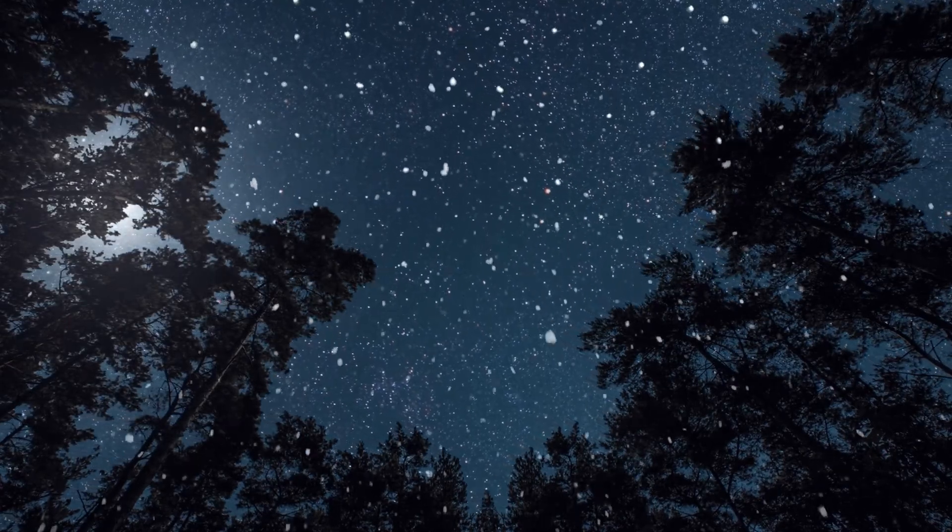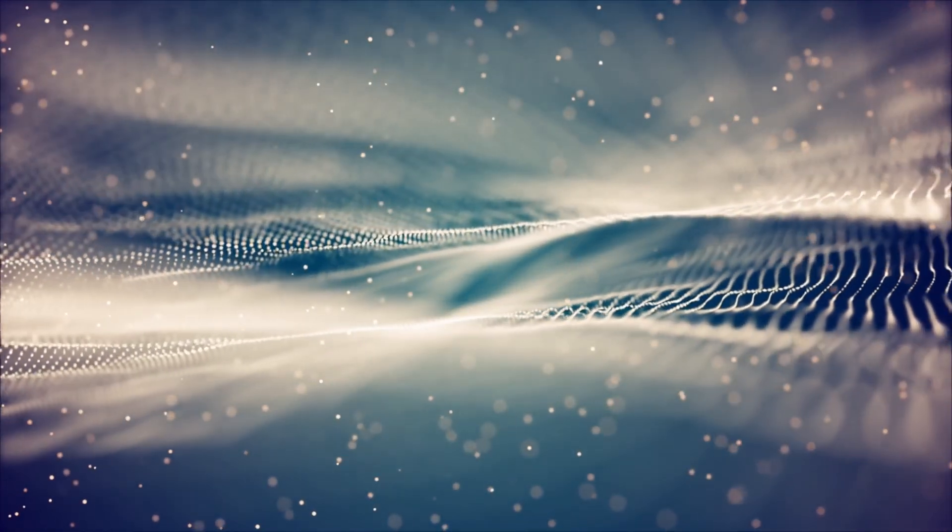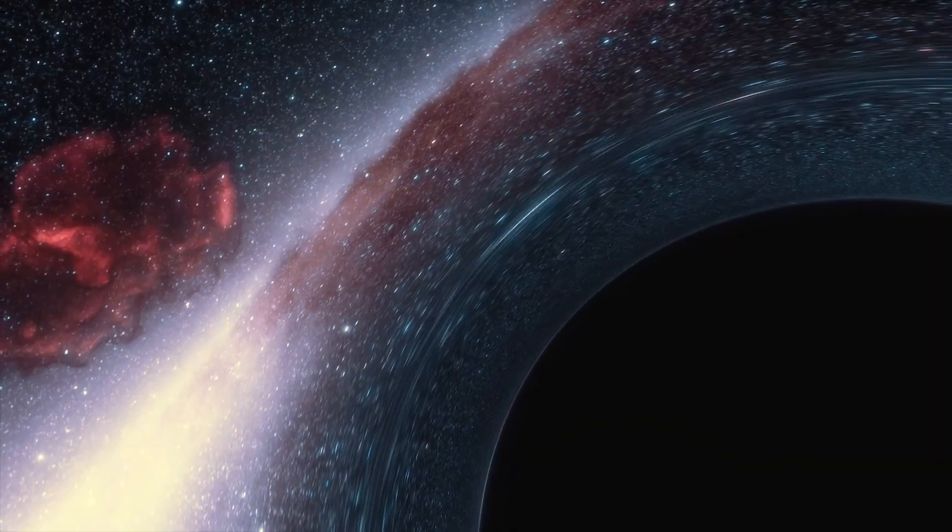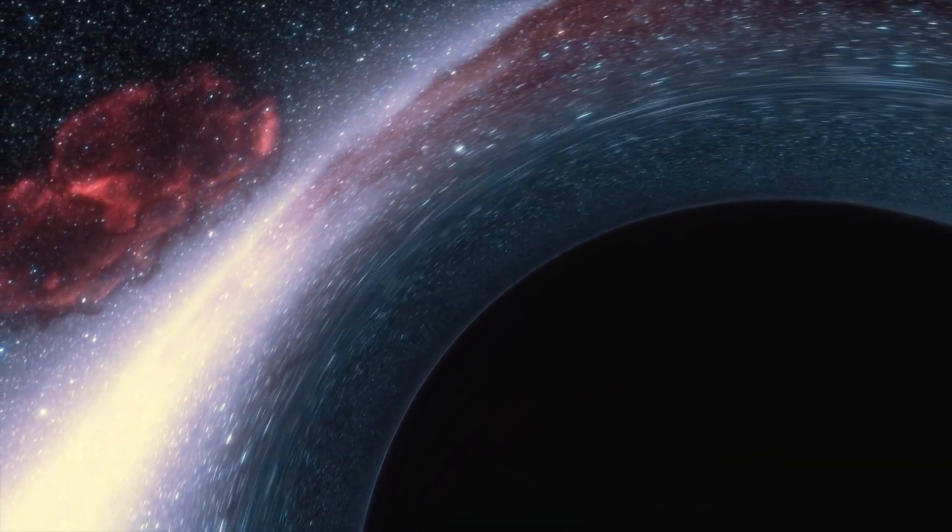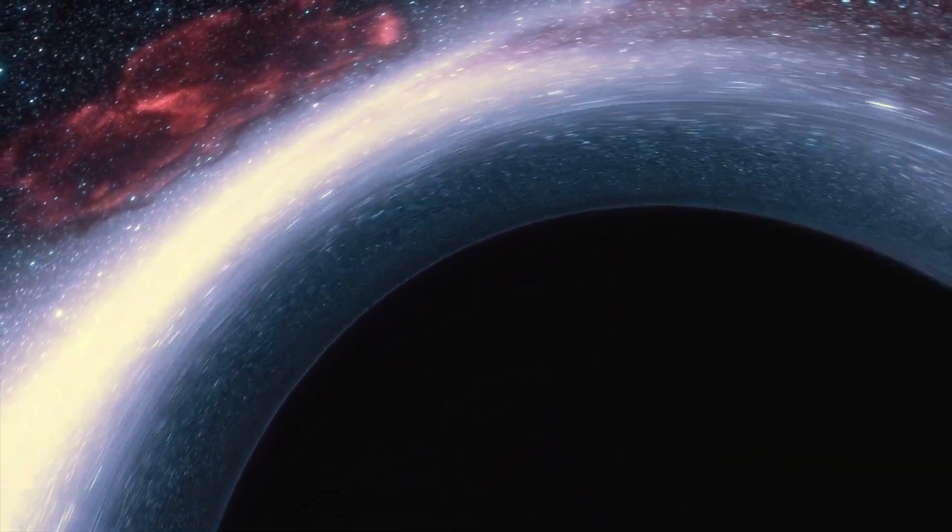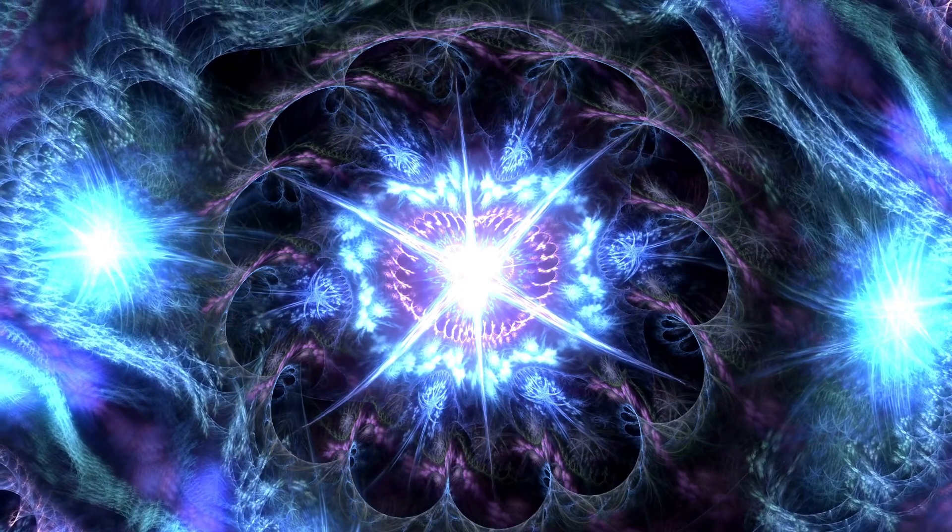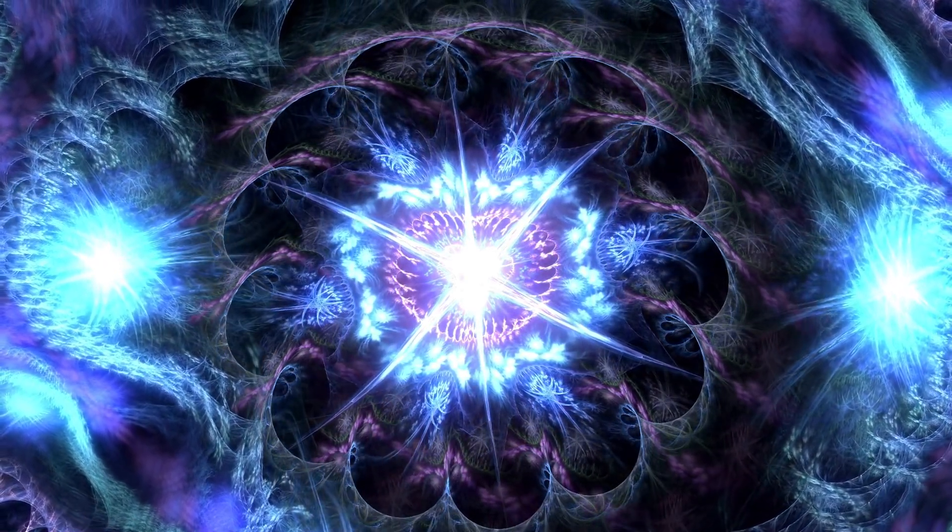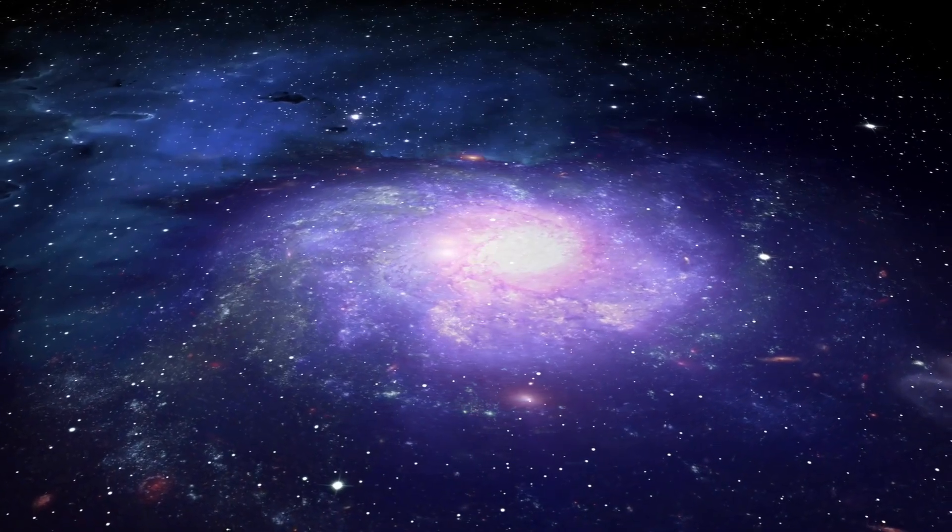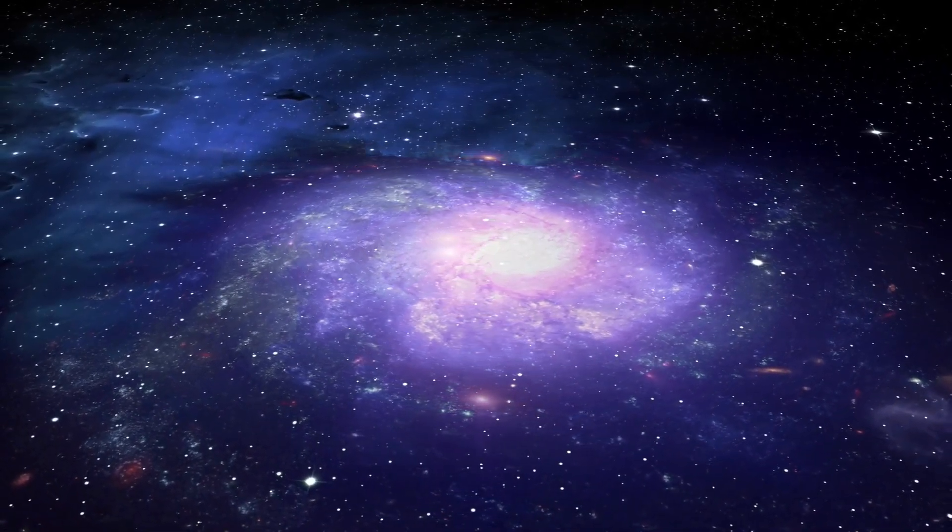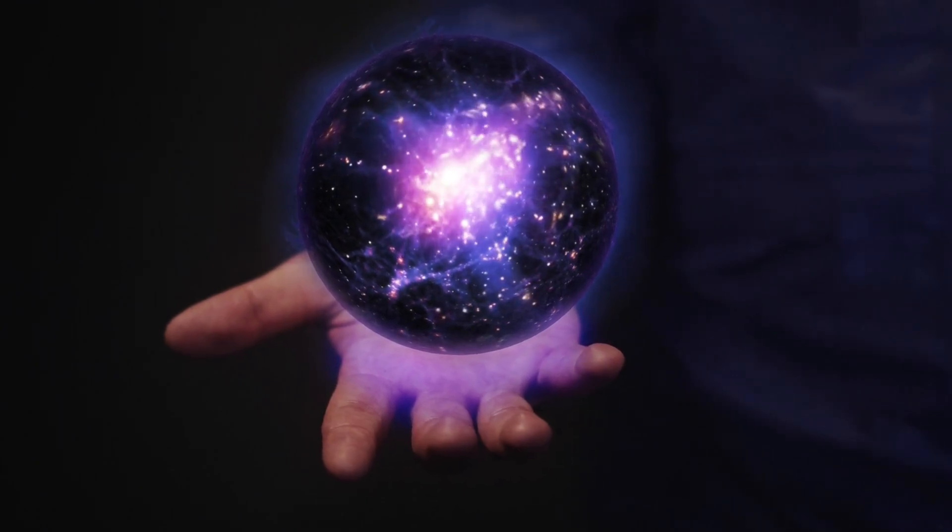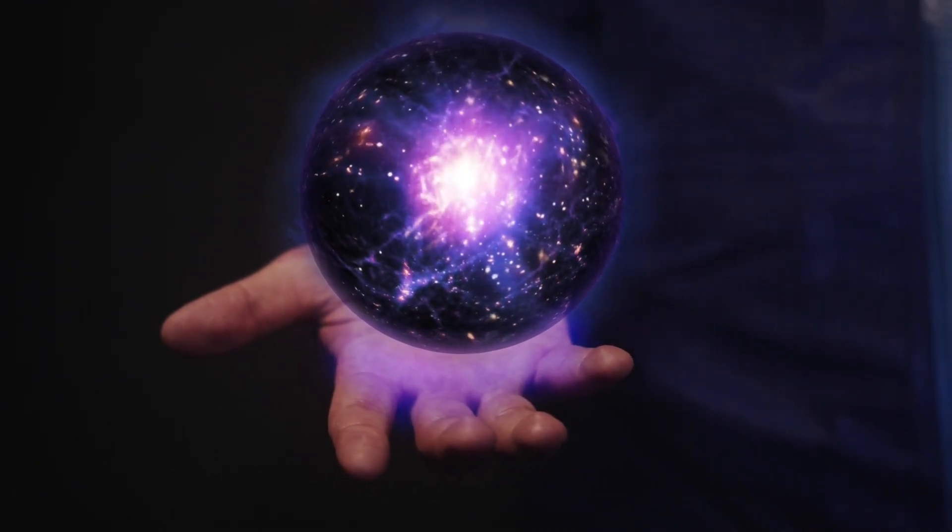The size of the observable universe is estimated to be about 93 billion light years. This is much larger than the estimated size of the entire universe, which is thought to be about 13.8 billion years old. The reason for this is that the expansion of the universe causes objects to move away from each other, since objects that were once close to each other are now far apart, it takes longer for the light from these objects to reach us.